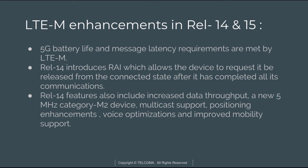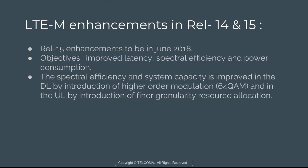Release 15 enhancements were completed in June 2018, with objectives of improved latency, spectral efficiency, and power consumption. To improve latency, enhancements include reducing the system acquisition time and supporting early data transmission — meaning data transmission already during the random access procedures. Spectral efficiency and system capacity are improved in the downlink with the introduction of higher order modulation 64QAM, and in the uplink by the introduction of finer granularity resource allocation.